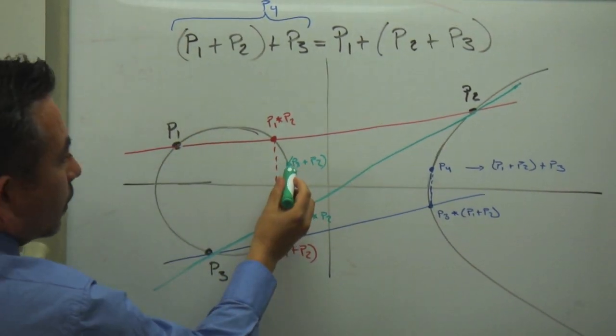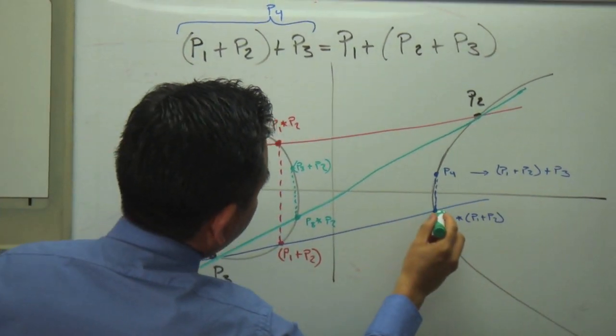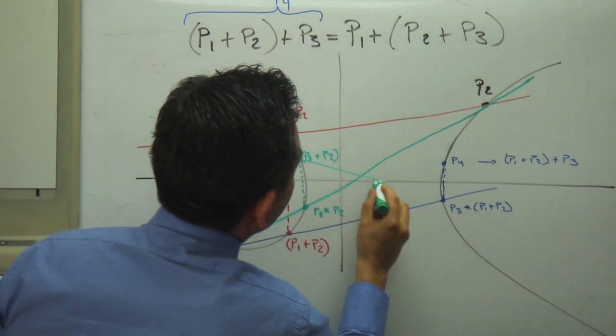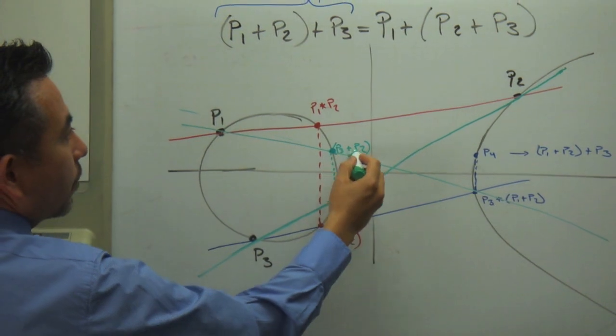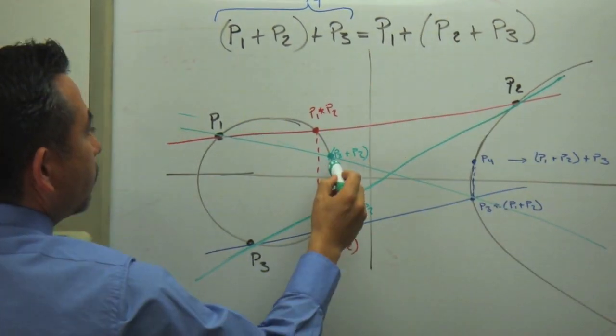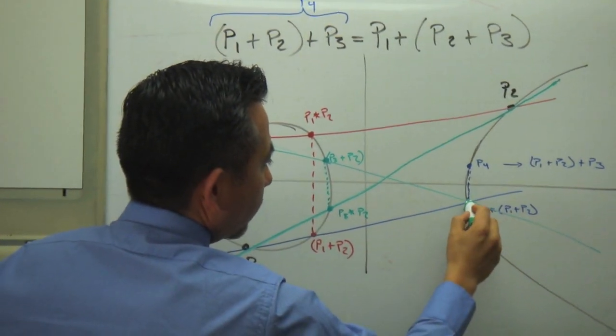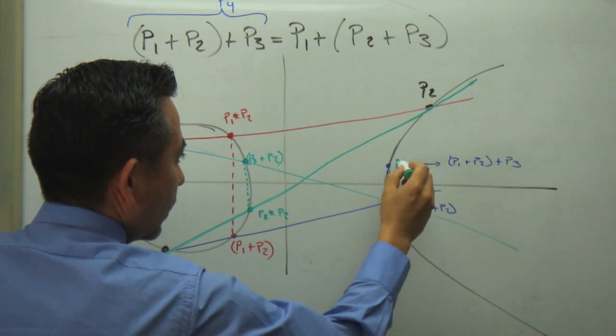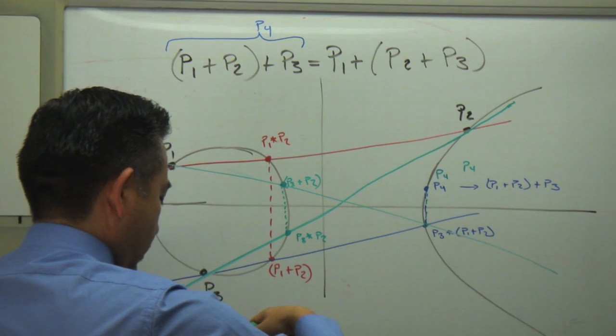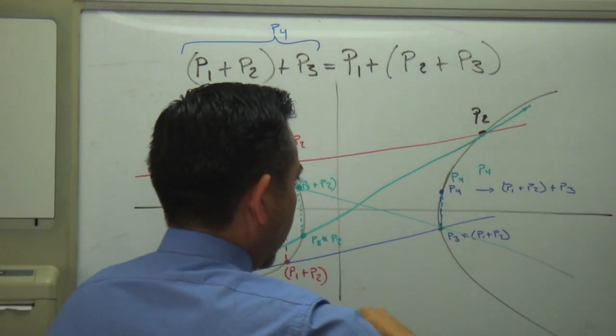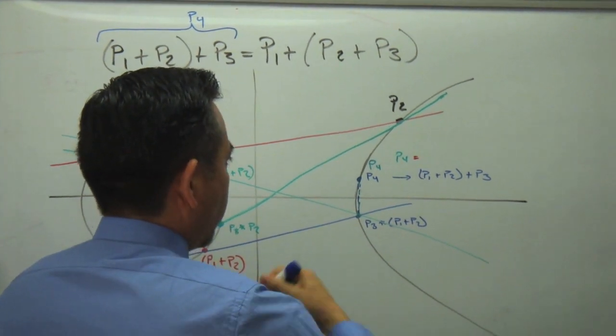So that means I have to have something like, yeah, almost, something like that. So this is P3 plus P2, I'm adding to P1, which is this one. So I draw the tangent line, and I cross here, and then I make the reflection, and there we go. P4. So P4 is precisely equal to P4.